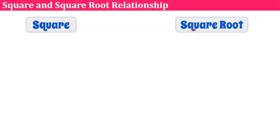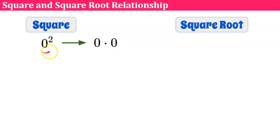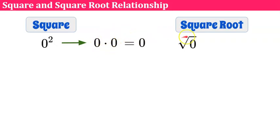Let's talk about the square and square root relationship — they have an inverse relationship. If we square a number, zero squared means taking the base and multiplying it by itself: zero times zero equals zero. When we talk about the square root of zero, we want to know what number multiplied by itself equals zero. Zero times zero equals zero, so the square root of zero is zero.